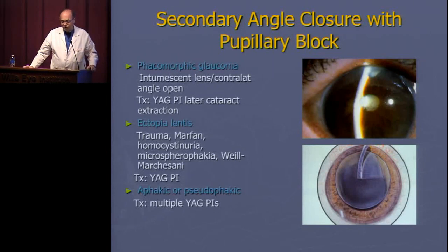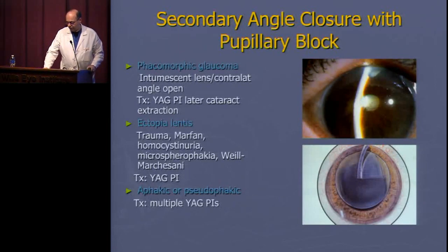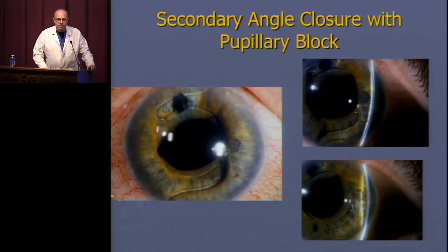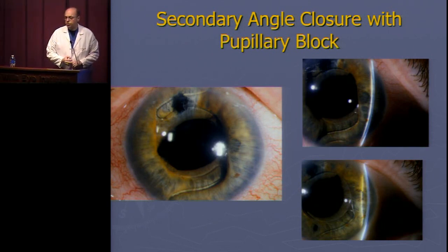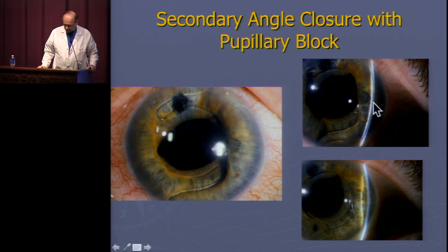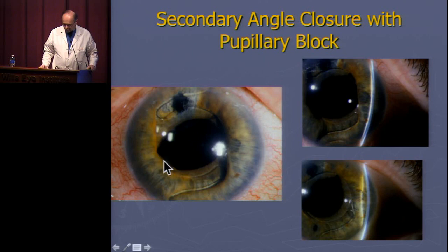Surprisingly, you can also have a pupillary block with aphakia or pseudophakia. For example, after a complex cataract extraction with an anterior chamber lens placed and a surgical iridectomy performed, you can still have a pupillary block. You can see the iris billowing anteriorly — in the slit lamp view, the iris is right up against the cornea. There's vitreous blocking the flow, and the optic of the IOL is perfectly sealing off the pupil.